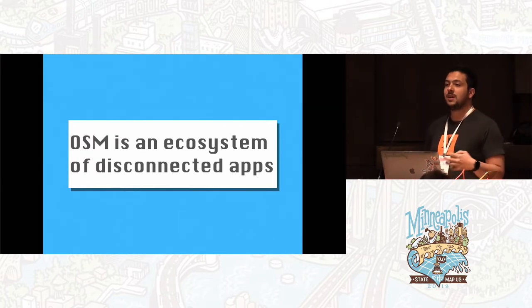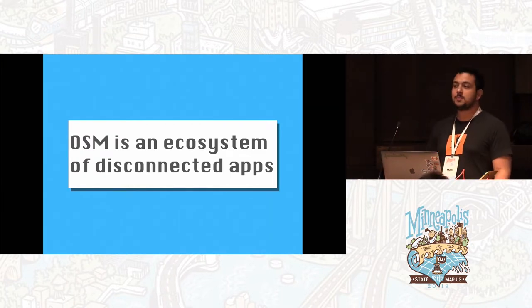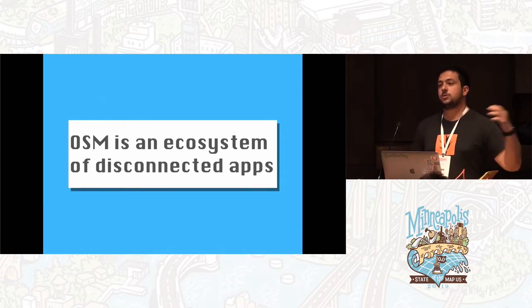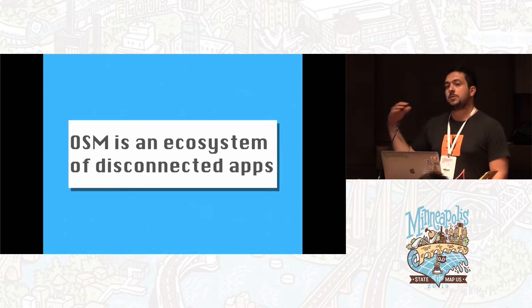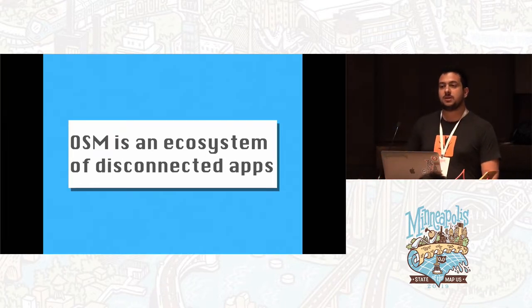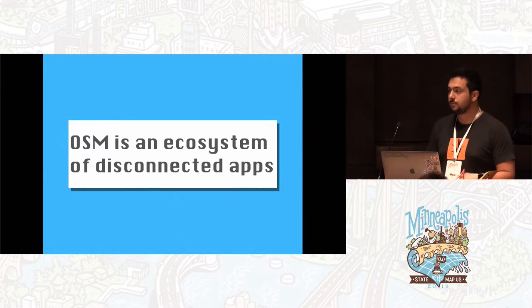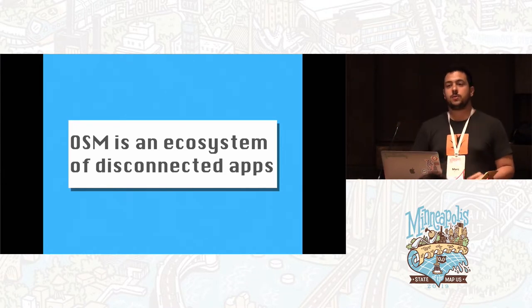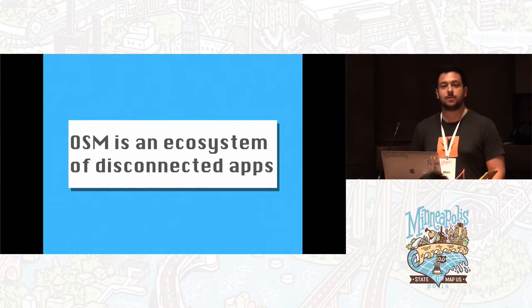OSM is an ecosystem — a thriving ecosystem of apps — but those apps are disconnected. If you're a user going to the task manager, you can pick a task out, you can map it out. It throws you to iD. Maybe you want to go validate later, validate it in OSMCha. You can go to all those different apps, but there's no thread that weaves everything together, other than your OSM ID and maybe the friend list that you talk to on the forums.